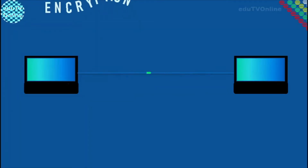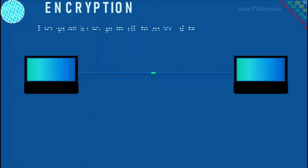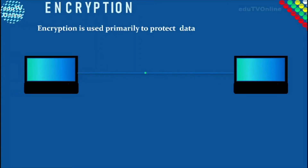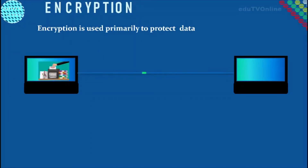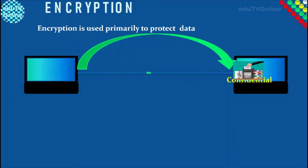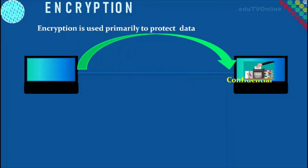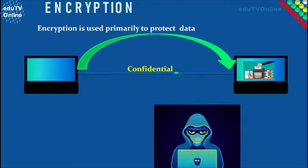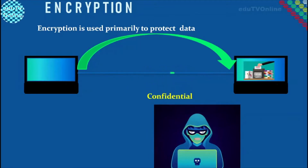Encryption is used primarily to protect data in case it has been hacked. Suppose that user A wants to send confidential data to user B. This data is being sent without any encryption, so if the data is hacked, the hacker can find out the details in the data easily.